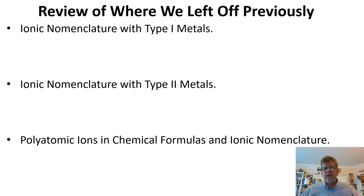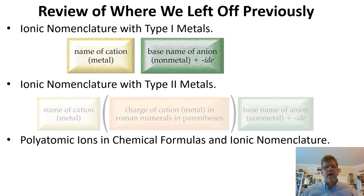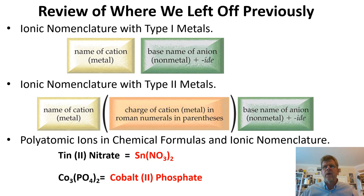We're going to finish up with our nomenclature unit of study and then move into a new unit. Previously, we had been dealing exclusively with ionic nomenclature — first with type one metals, which form only one type of cation, then type two metals with different oxidation states and cationic charges. The last thing we looked at were polyatomic ions as a substitute for the nonmetal. All of these were for ionic nomenclature, but we have yet to look at covalent nomenclature — covalent molecules — which we'll start into now.